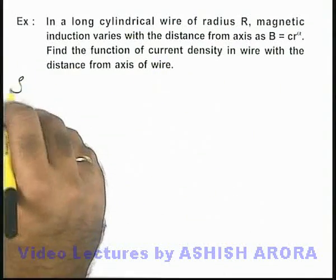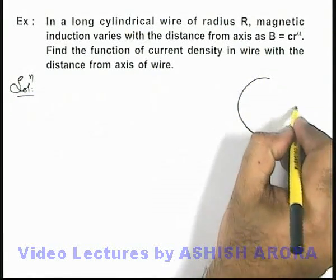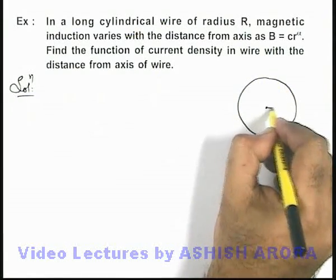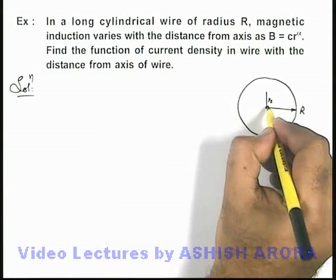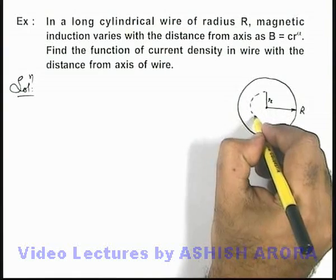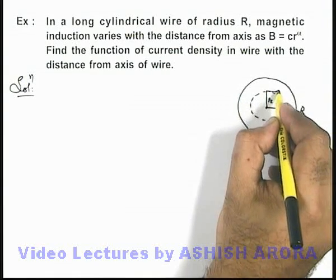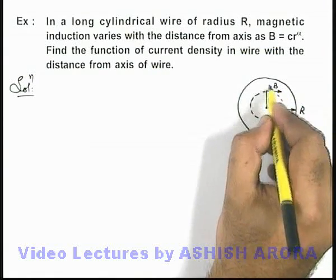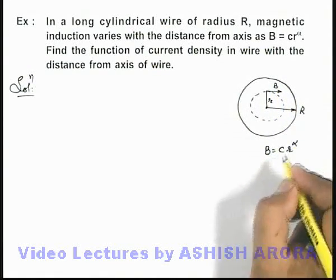Now in this situation, if we just draw the cross section of the wire, which is of radius R, we can say at a distance r from the central axis if we consider a closed path, then on the tangential direction of this closed path, the magnetic induction B is given as cr^α.